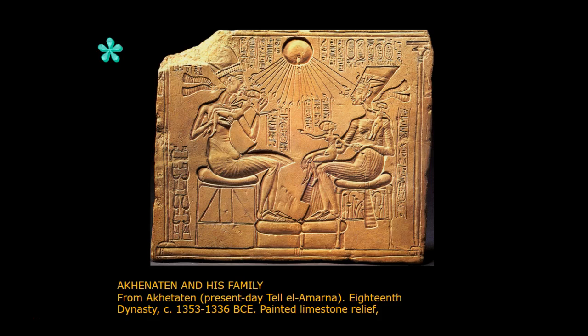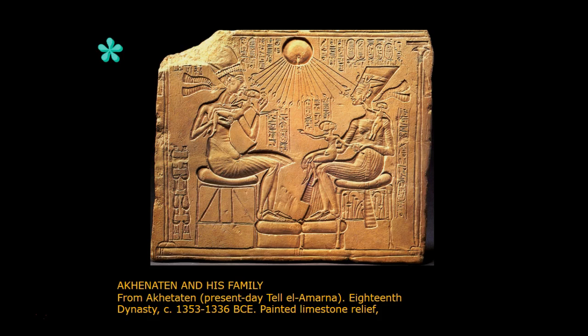Akhenaten radically realigned Egyptian religious cults. He suppressed traditional worship of most deities in favor of a cult centered on the sun god Aten, and proclaimed himself head of this cult. Thus, we see him and his family under the sun's benevolent rays. Even the name he adopted — Akhenaten — reflects his new religious orientation; it means 'effective for the Aten.'